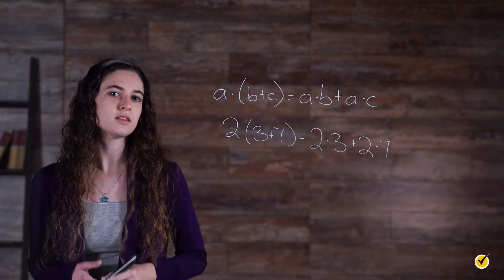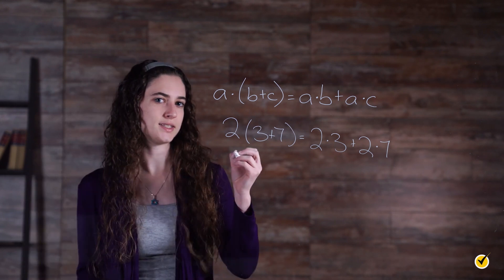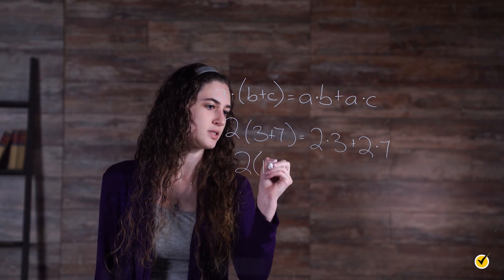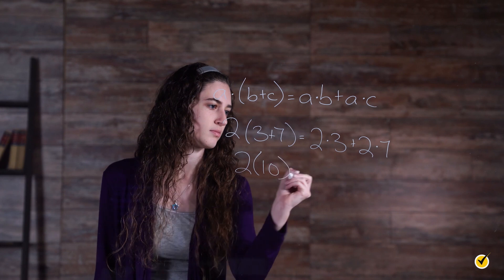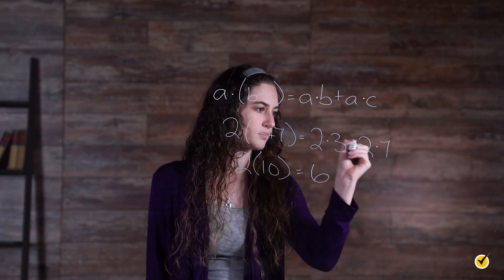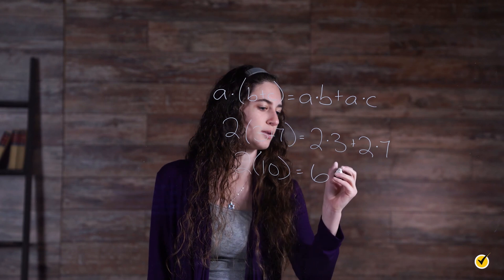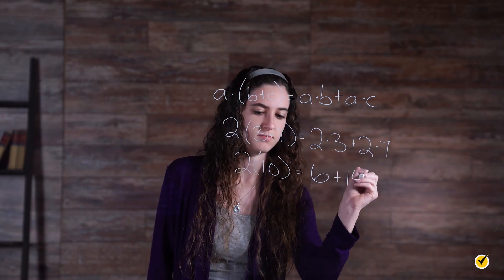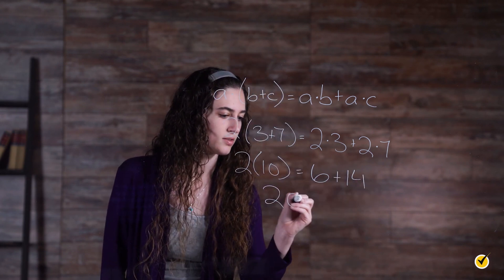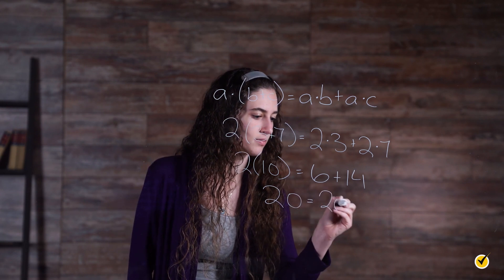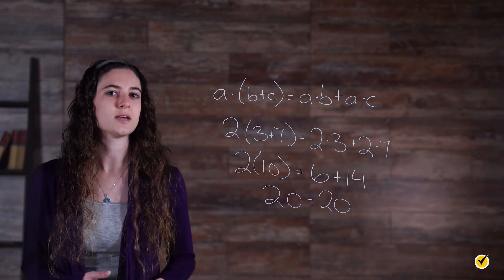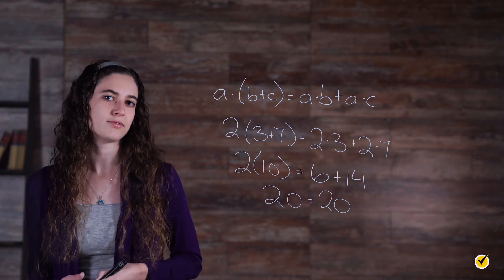The parentheses on the left tell us first to add 3 and 7. So we have 2 times 10 equals 2 times 3, which is 6, plus 2 times 7, which is 14. 20 is equal to 20. The sum of the products on the right side of the equation gives the same result as multiplying on the left.